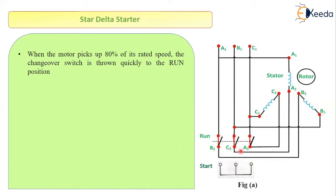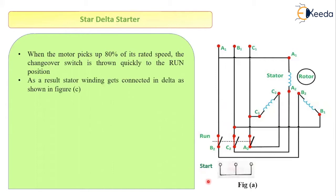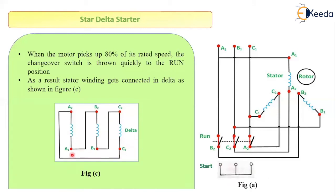Once the changeover switch is thrown at the run position, the B2 terminal is connected to run position, C2 is connected to run position, and A2 is also connected to run position. In this case, the stator of the induction motor will get connected in delta, just as shown in figure C. You can see where A2, C2, and B2 terminals are connected. So initially the motor was connected in star, and once it picked up 80% of its rated speed it got connected in delta.